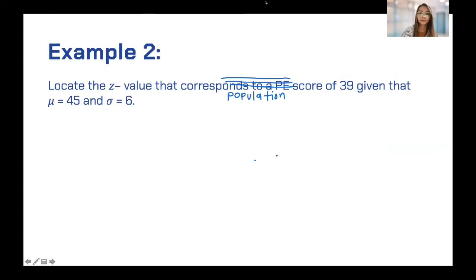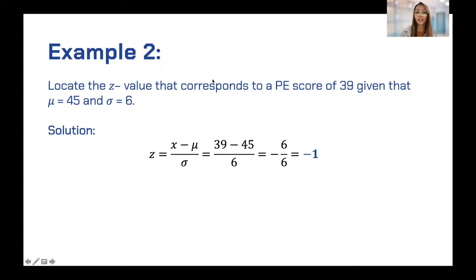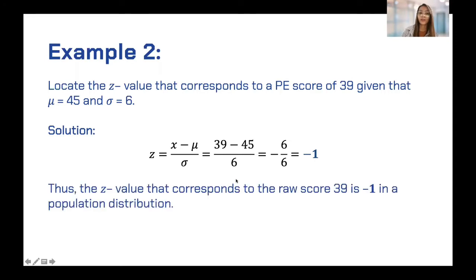Example: Locate the Z value that corresponds to a PE score of 39, given that mu equals 45 and sigma equals 6. Applying the formula: Z equals 39 minus 45 over 6, which is negative 6 over 6, so Z equals negative 1. The value that corresponds to raw score 39 is negative 1 in a population distribution.